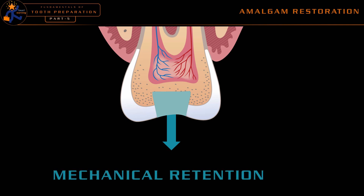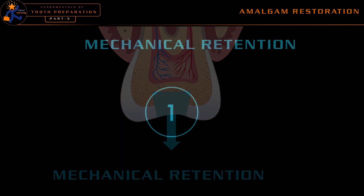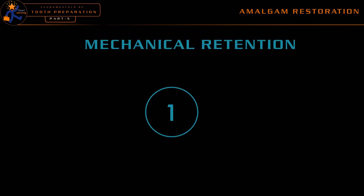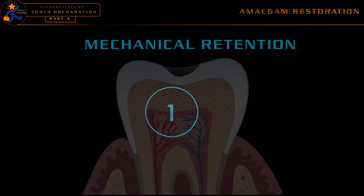This type of retention is called mechanical retention. In short, mechanical retention is given for amalgam restorations, where we prepare a cavity with a narrow occlusal surface compared to the pulpal floor. Mechanical retention is the first form of retaining restorative materials inside the cavity preparation.